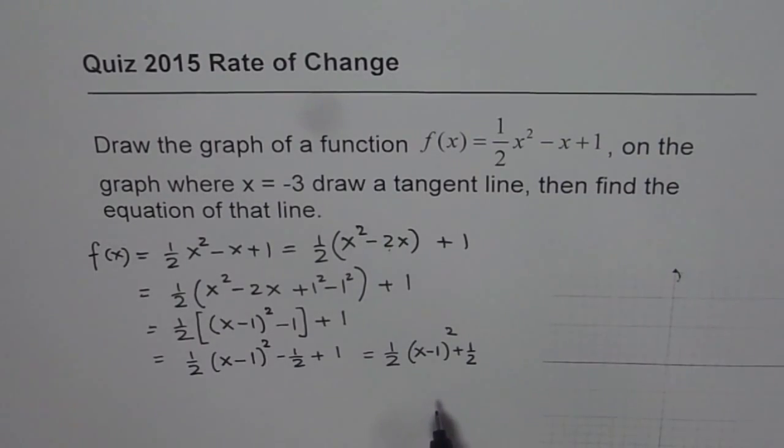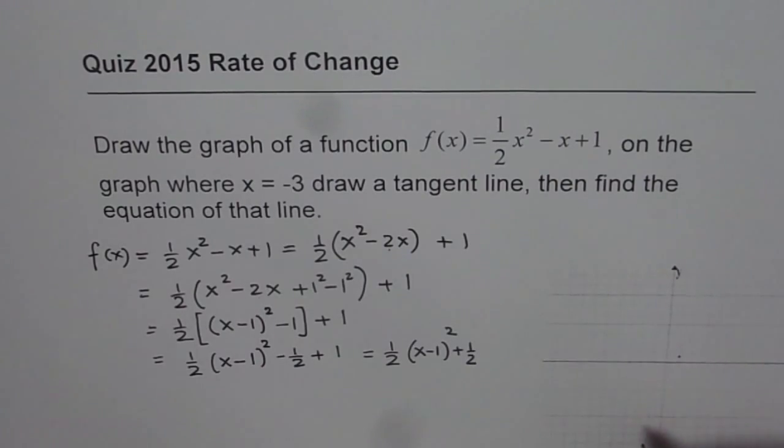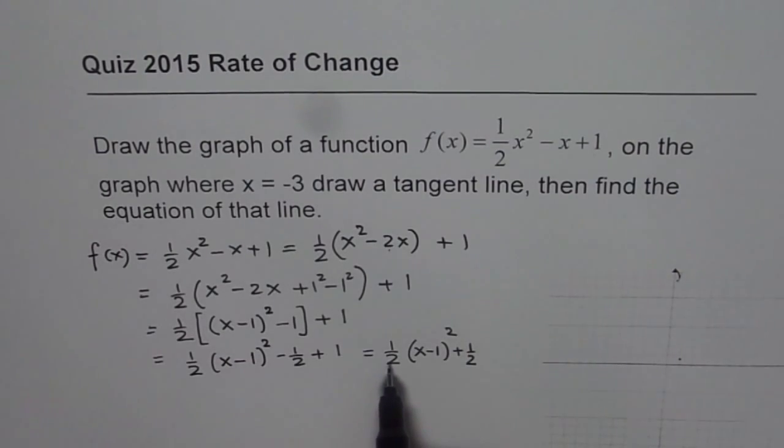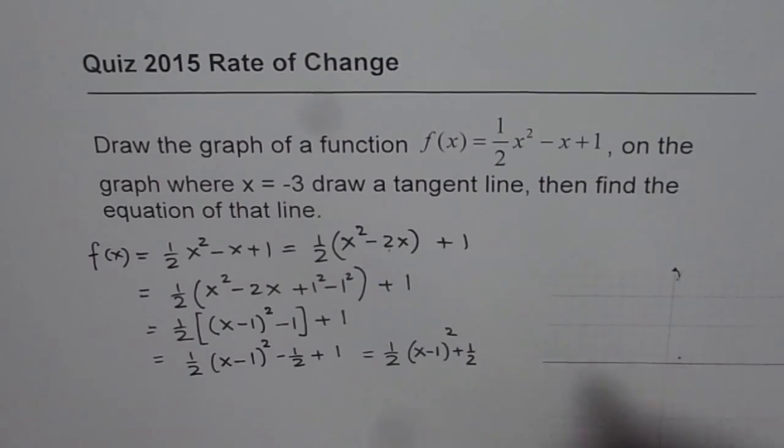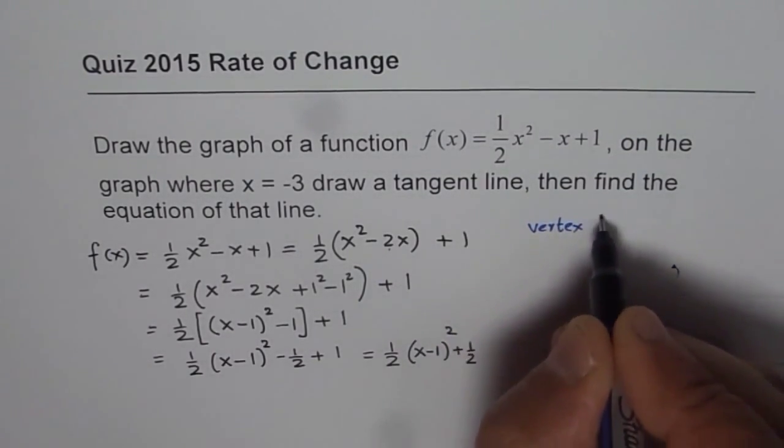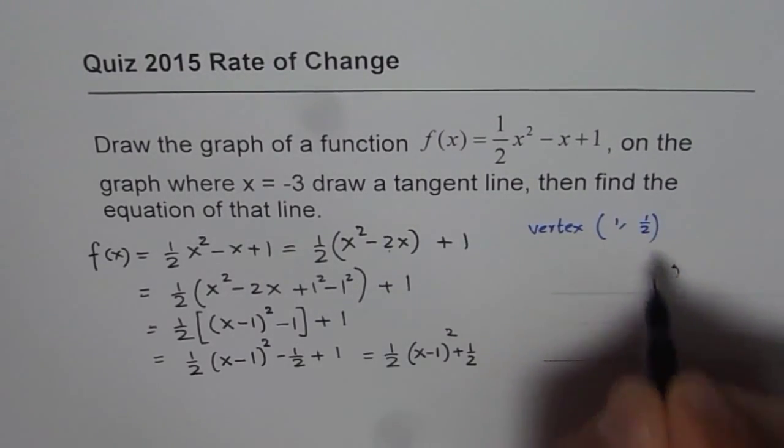So now you can sketch this parabola. The vertex is at (1, 1/2). So at 1, half, let us say that is your point, vertex. Now, it is opening upwards, and the steps are what? So we have the vertex here. Now we are trying to sketch the parabola. So we have vertex which is at (1, 1/2), right? These are the points.